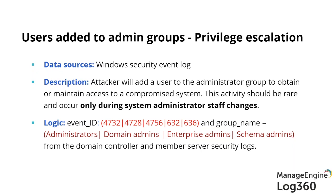When looking at sensitive accounts in Active Directory, don't just count the direct members of domain admins — also consider nested groups. What if your VPN access group has seven members and is nested into domain admins? All seven become domain admins. You should know on a day-to-day basis who is being added or removed from the domain admins group.